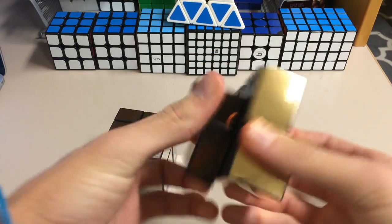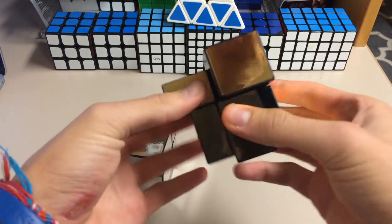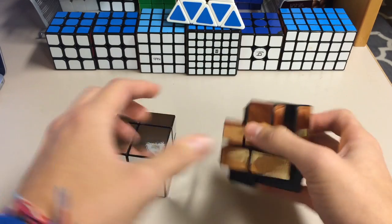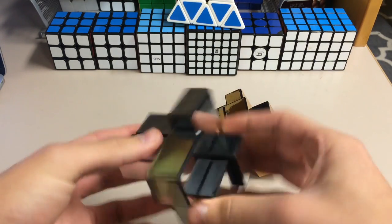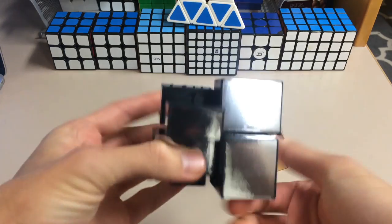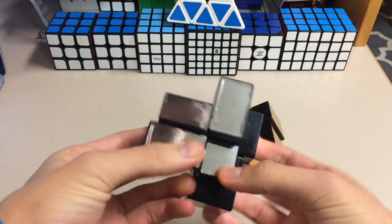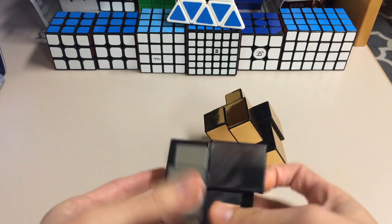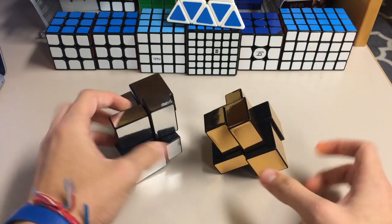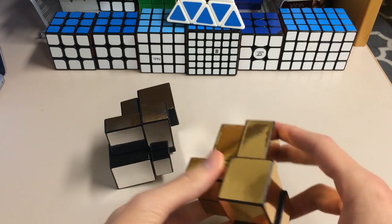So I'm just going to go ahead and scramble this. And I'll show you what both of these look like scrambled side by side. They turn really nicely out of the box. And I think it's a great idea. I'm surprised there isn't a mass produced 4x4 yet. Or if there is, somebody let me know because I'd love to get that. Because I love mirror blocks.